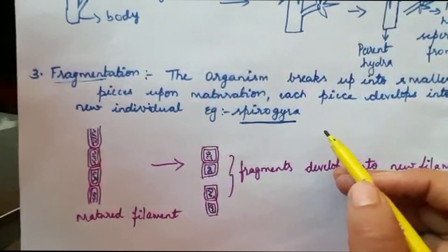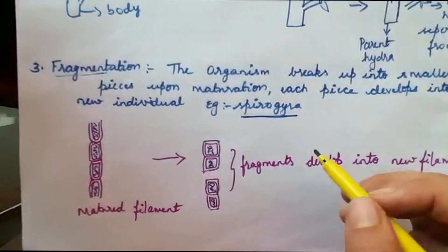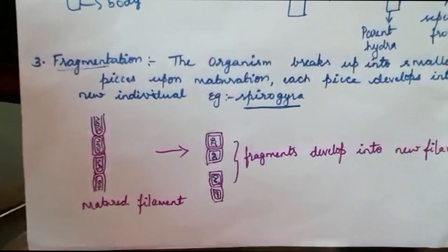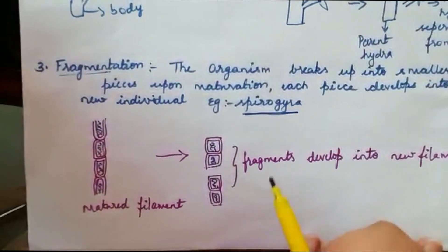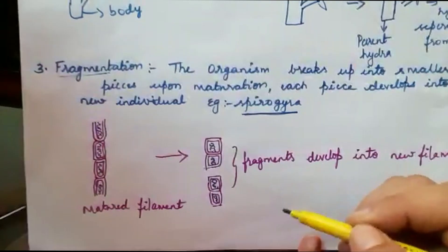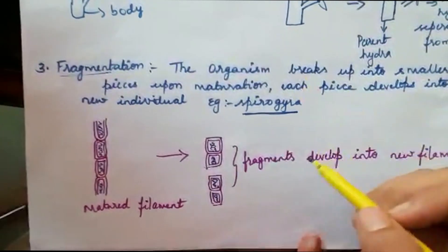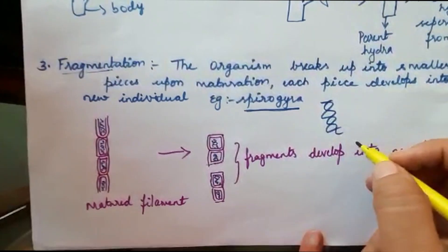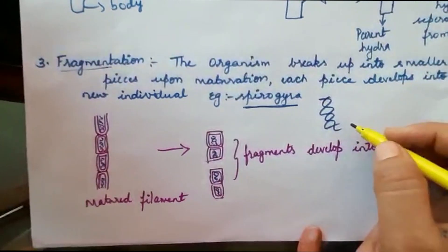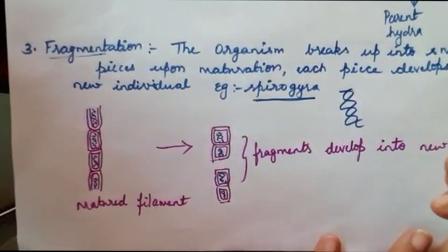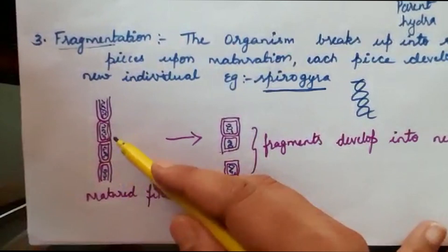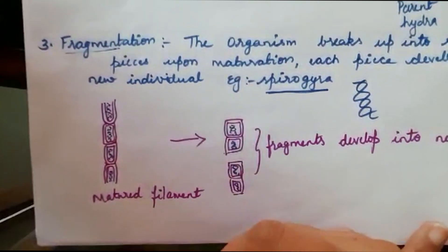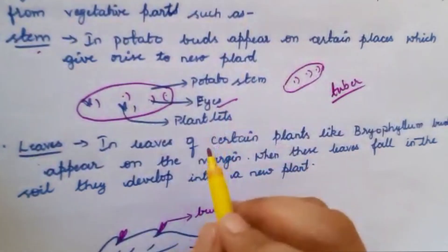Spirogyra is an alga — you have studied it in 9th class. It is a filamentous alga, meaning the cells are arranged end to end. It is an aquatic alga found in water. These thread-like structures you can see are spirogyra.